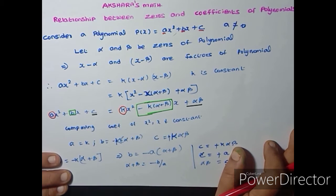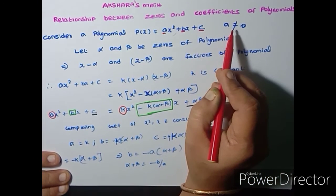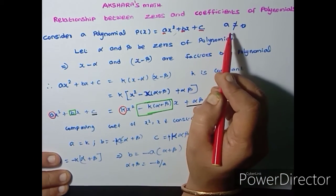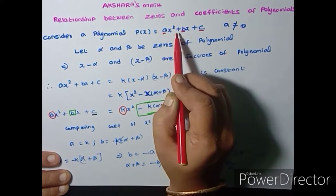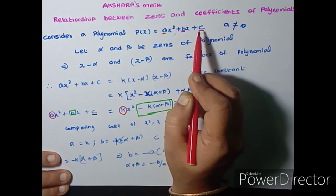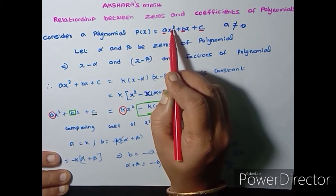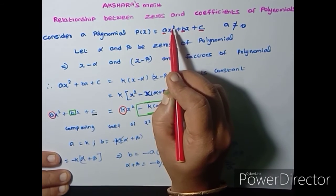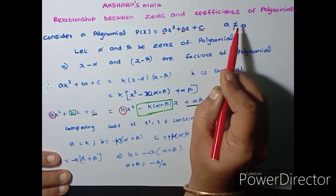First, consider alpha and beta to be the zeros of the polynomial Ax² + Bx + C = 0, where A is not equal to 0. Why are we saying A is not equal to 0? If A is 0 then the whole term vanishes and you get only Bx + C. Whenever you talk about a polynomial, the coefficient of the highest power term should not be equal to 0.